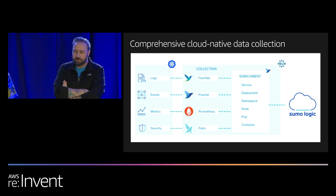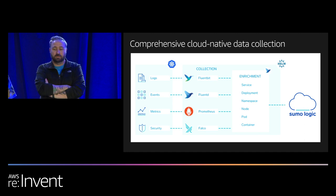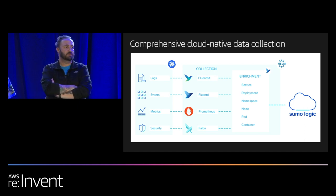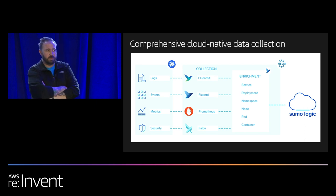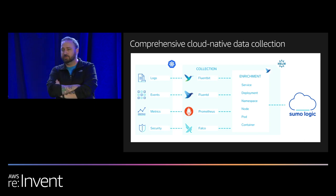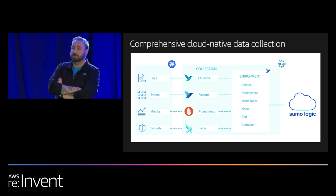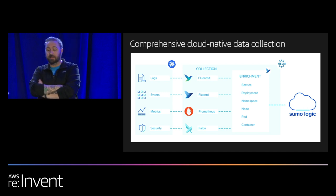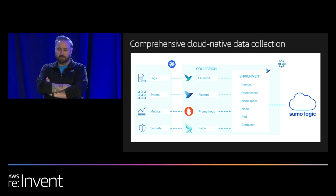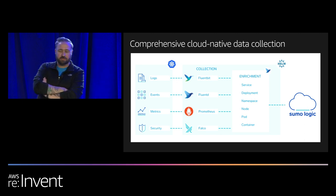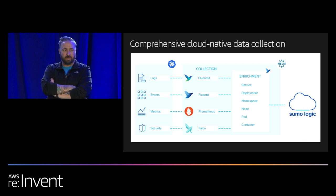Within Kubernetes, it starts with comprehensive collection of data leveraging cloud-native open source technology. For logs, we use Fluent Bit — a lightweight log aggregator that runs in the system. For events, we have a Fluent D plugin that watches the API server and captures all events as they stream in. For metrics, we integrated with Prometheus — the de facto choice for monitoring any Kubernetes cluster and the second project in the CNCF right after Kubernetes. We deploy Prometheus, it auto-discovers everything in the cluster, and we deliver data to Sumo via the remote write API.